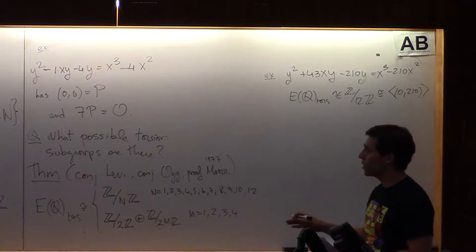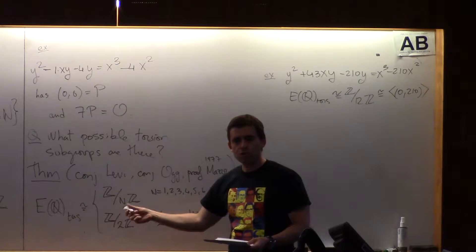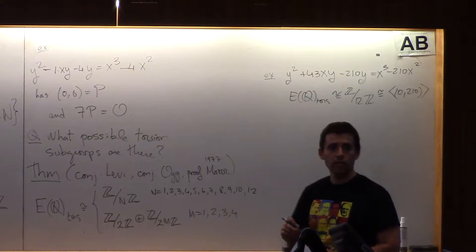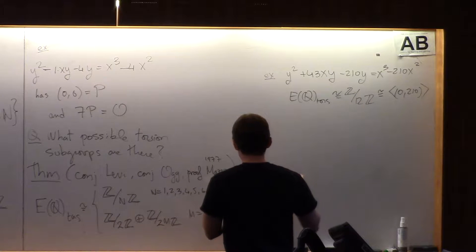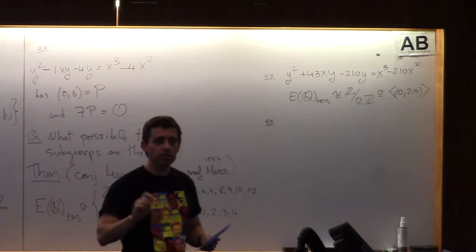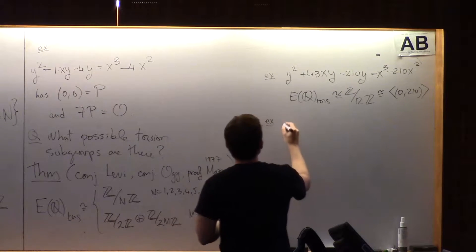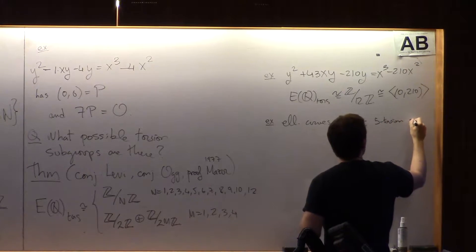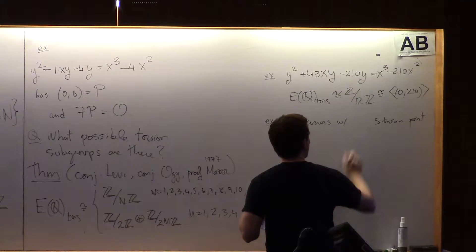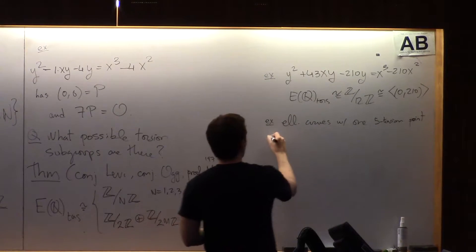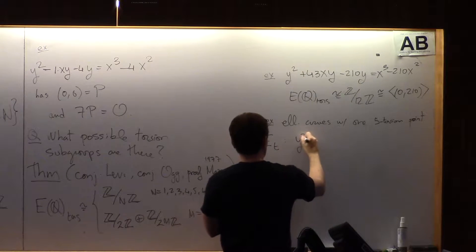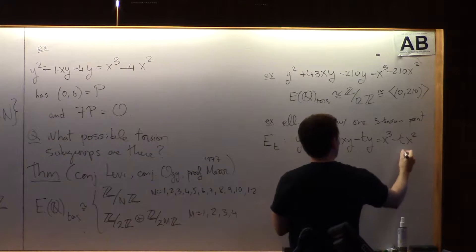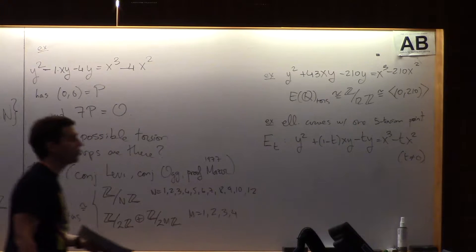The interesting part of elliptic curves over Q is that the elliptic curves with some type of torsion are actually very neatly organized among all elliptic curves, meaning that they come in one parameter families. If you want to know what are the elliptic curves with five torsion points, those are all neatly organized in one family.